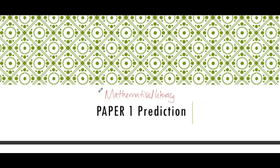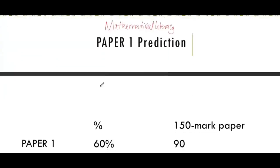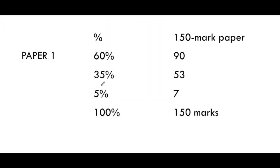But what do we mean to expect? First and foremost, Paper 1 is out of 150. Of 150, 60% is going to come from finance, 35% is data handling, and 5% will be probability.